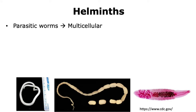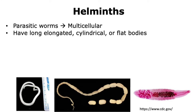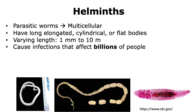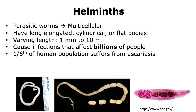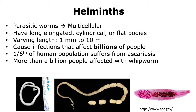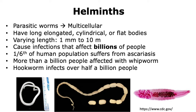Helminths are multicellular parasitic worms that can have long, elongated, cylindrical, or flat bodies. They come in a variety of lengths from about 1 mm to 10 meters. They are known to cause infections that can affect billions of people around the world. About one-sixth of the human population suffers from ascariasis, caused by the helminth Ascaris. More than a billion people are affected by whipworm, and hookworm infects over half a billion people. Thus, helminths are known to cause a lot of misery in humans.